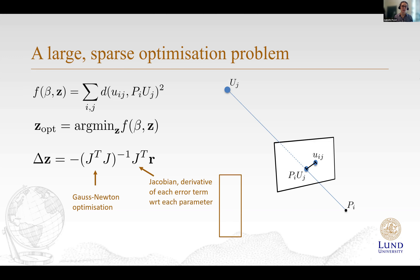A common optimization method is Gauss-Newton. In this formula we have the Jacobian J, which is the derivative of each error term with respect to each parameter — the cameras and 3D points. This Jacobian is very rectangular in shape: we have many more error terms (reprojection errors) than parameters. When we do this optimization for 3D reconstructions, we usually refer to it as bundle adjustment. Here's an illustration from my colleague Carl showing how you can do this on a larger object, like a blue castle, taking many images from all different viewing directions.